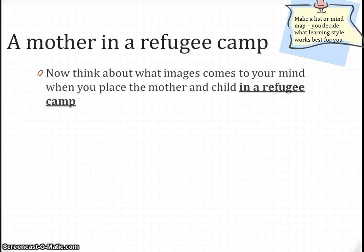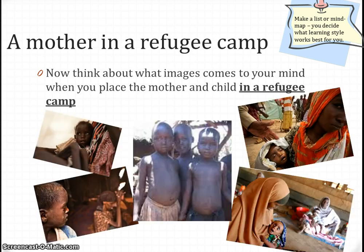Now do another mind map, but place the mother and child in a specific setting — that of a refugee camp. Press pause now for your second mind map. Welcome back. Did you consider images like these? Think of words that spring to mind here: pain, suffering, malnutrition, sadness, desperation.